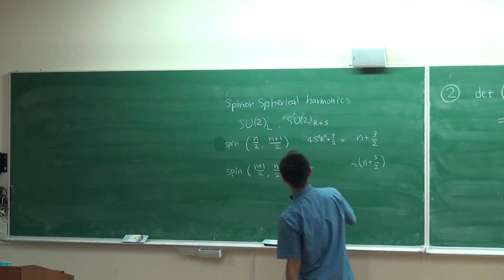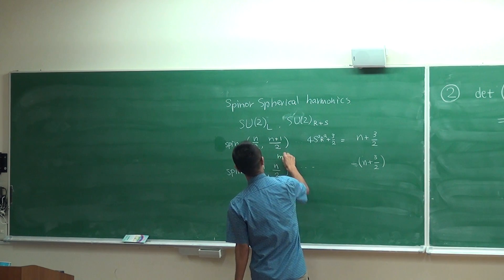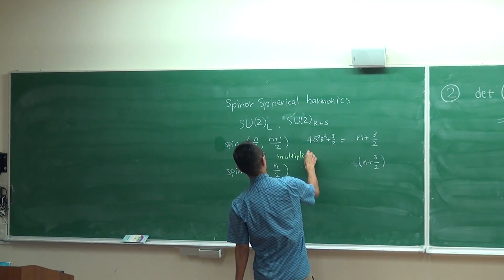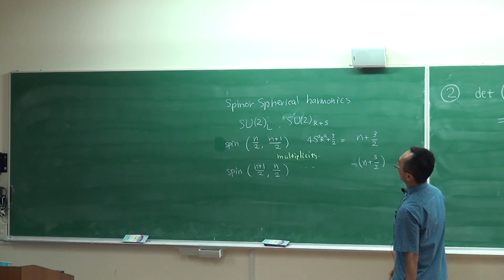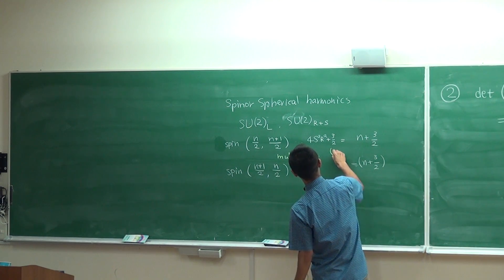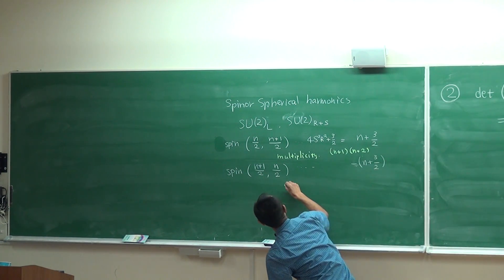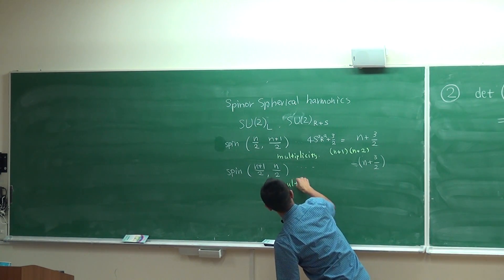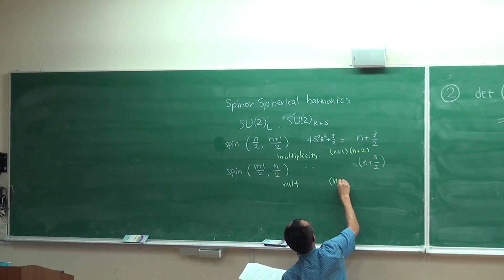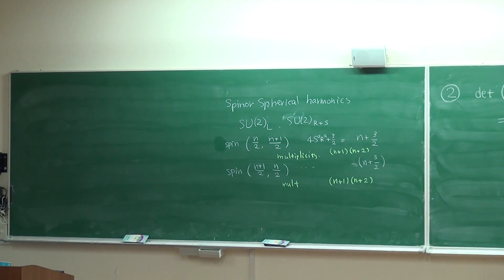We can also easily compute the multiplicity. The multiplicity of spherical harmonics is labeled by this quantum number N. The multiplicity of the first type is 2N and of the second type is 2(N+1).